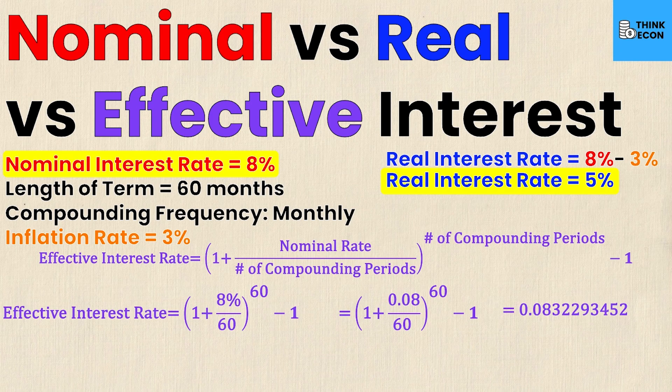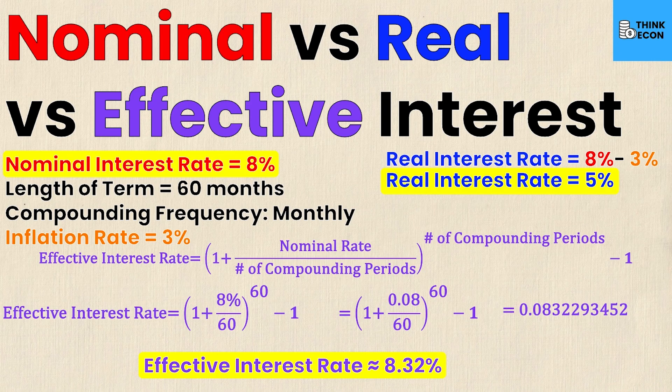Simplifying to two decimal points, the effective interest rate is eight point three two percent. Comparing all three: the real interest rate is five percent, the nominal rate is eight percent, and the effective rate is eight point three two percent. The spread from the lowest to the highest rate is over three point three percent — that's a huge spread. So when looking at real returns, you must consider both the number of compounding periods and inflation.